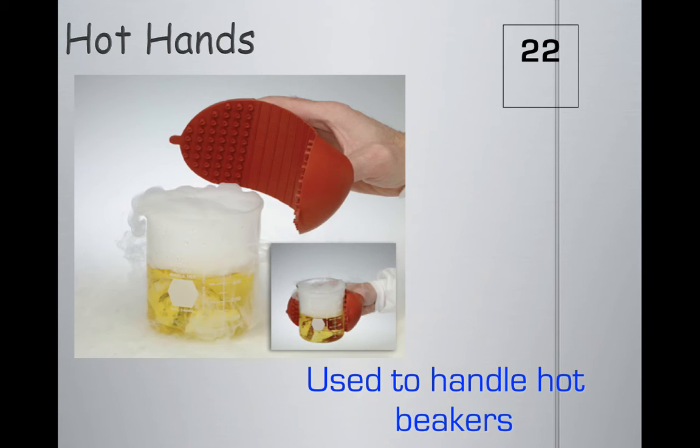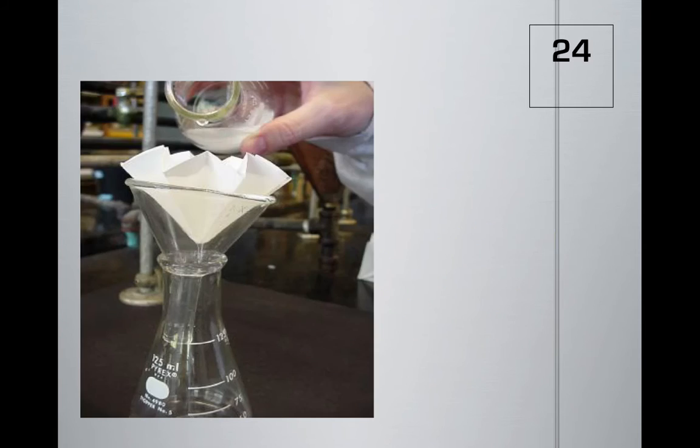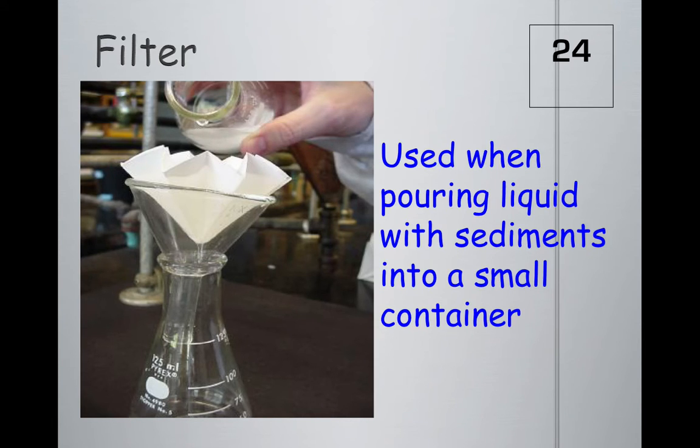This item is known as a funnel, used when pouring liquid into a small container. This is another funnel - I think this one's glass - and what we're looking at here inside the funnel is filter paper. The filter paper is for objects or substances like sand mixed in with water or some kind of gritty stuff. It's used when pouring liquid that has sediments into a small container.